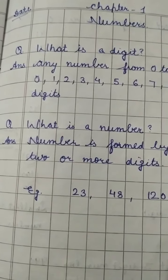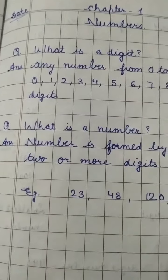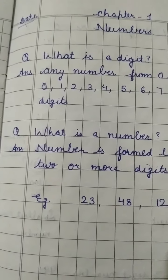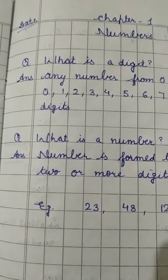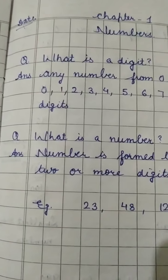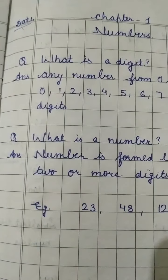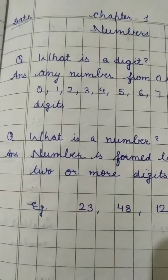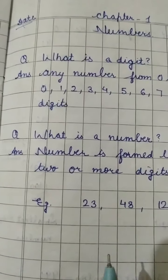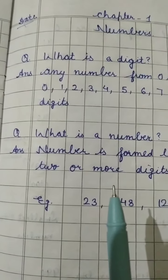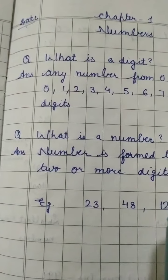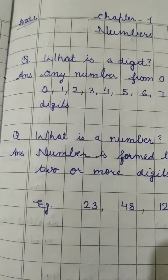So children let us start with chapter 1 numbers. Before we do anything from the book I will just quickly recapitulate whatever you have done in class 2. First of all I would like to tell you about the copy of your mathematics. See children you have to use square line copy as you are already using but the boxes should be small ones.